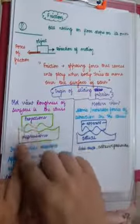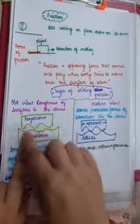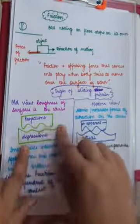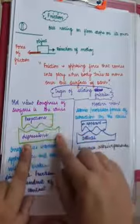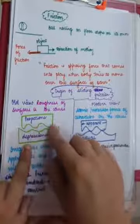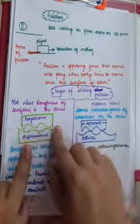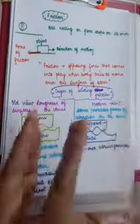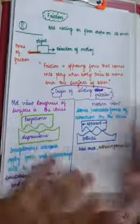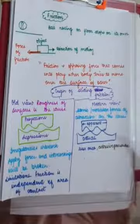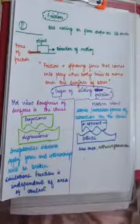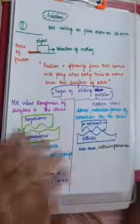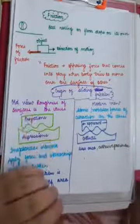These are known as projections and these are known as depressions. When one object tries to move over the other object, these interlockings, these irregularities interlock with each other. You would have to apply a force to break those interlockings and to move the object. So those interlockings are the reason for force of friction. This is the saying of old view.